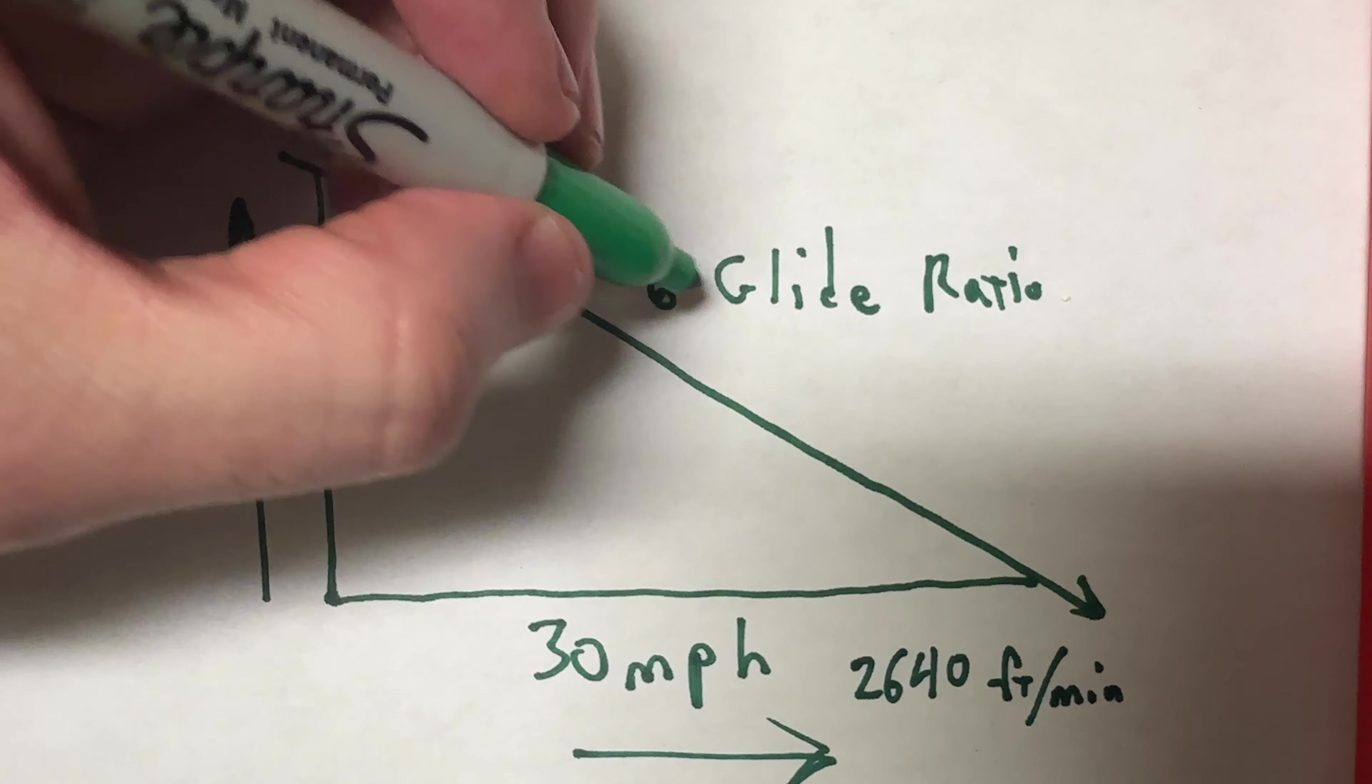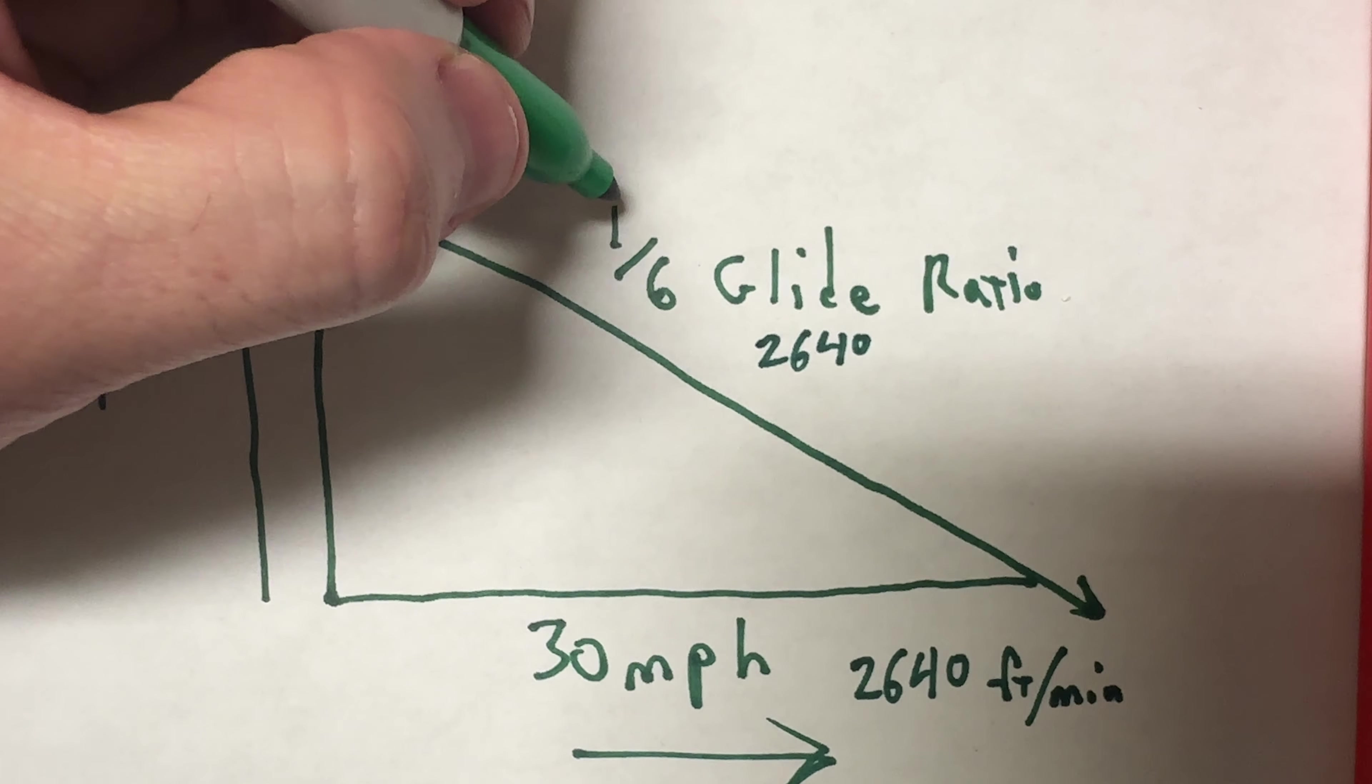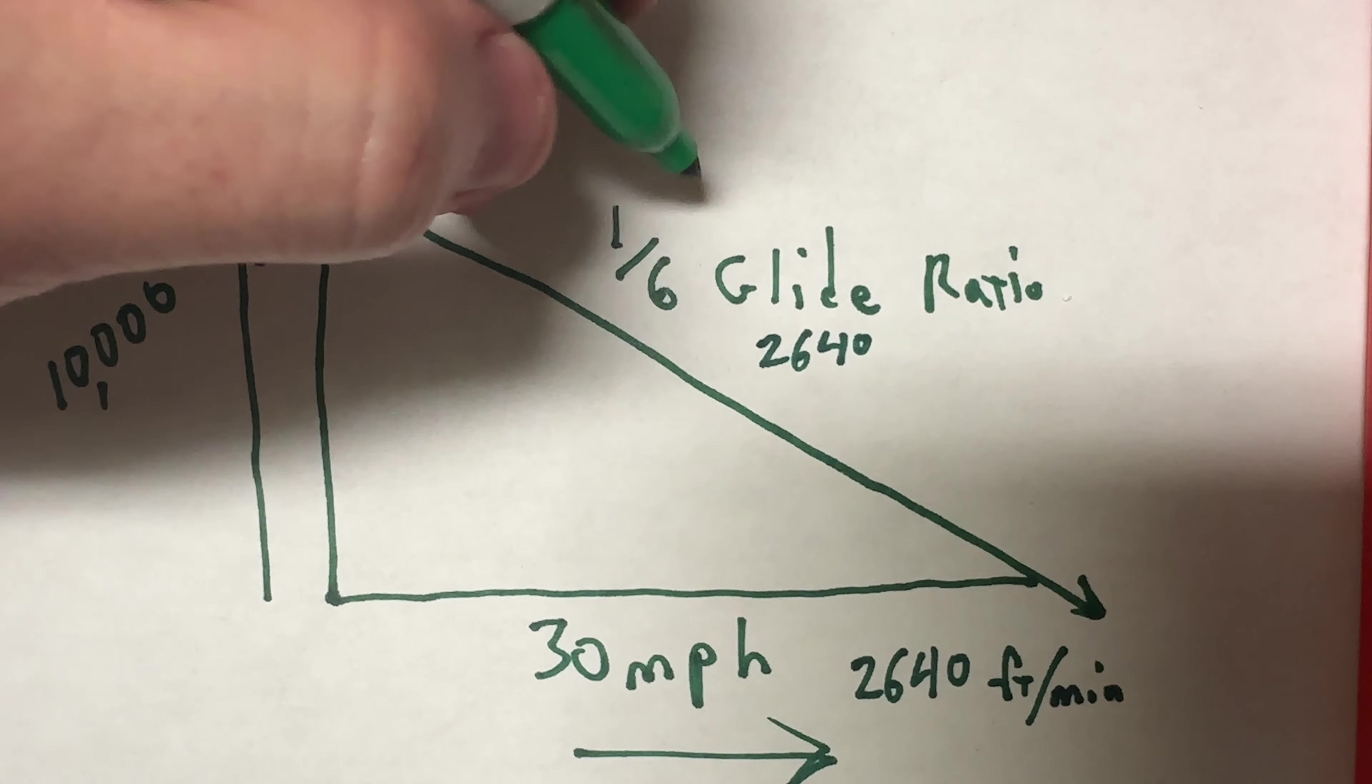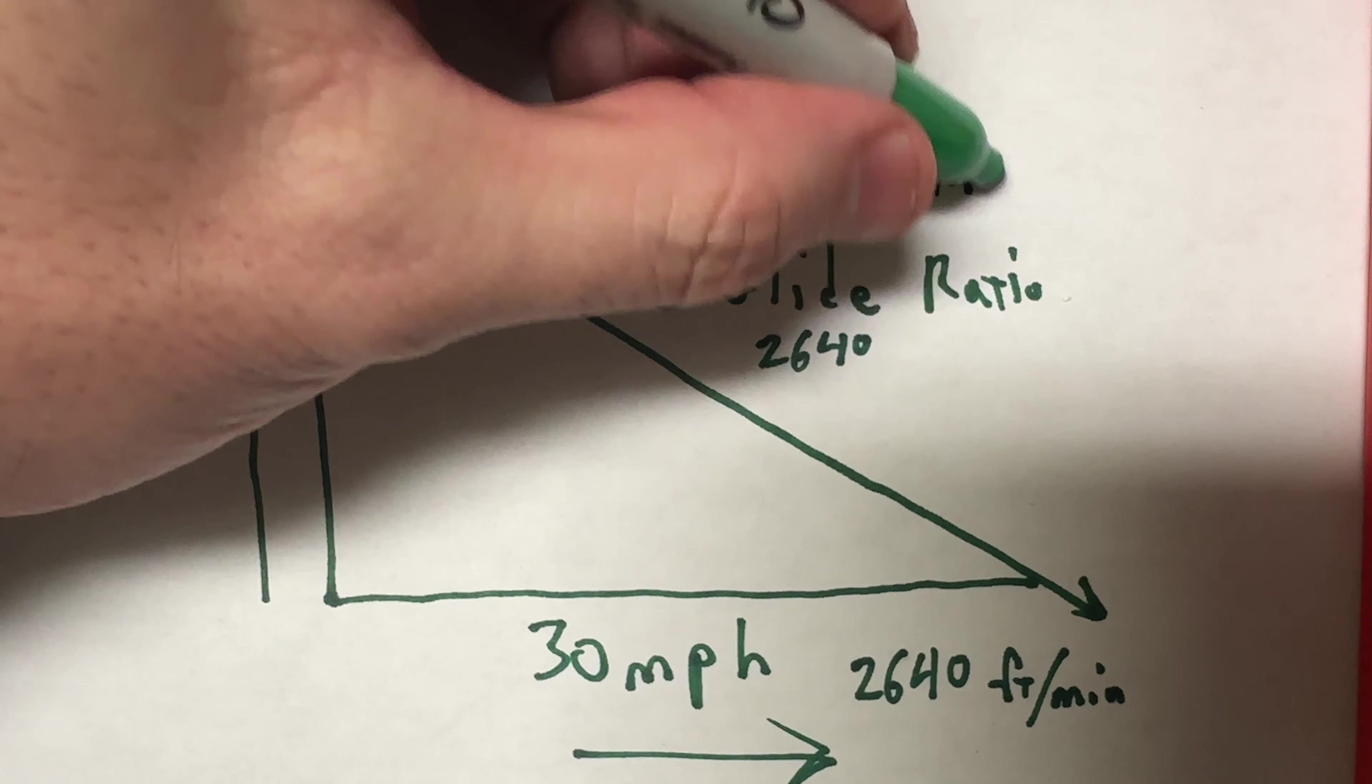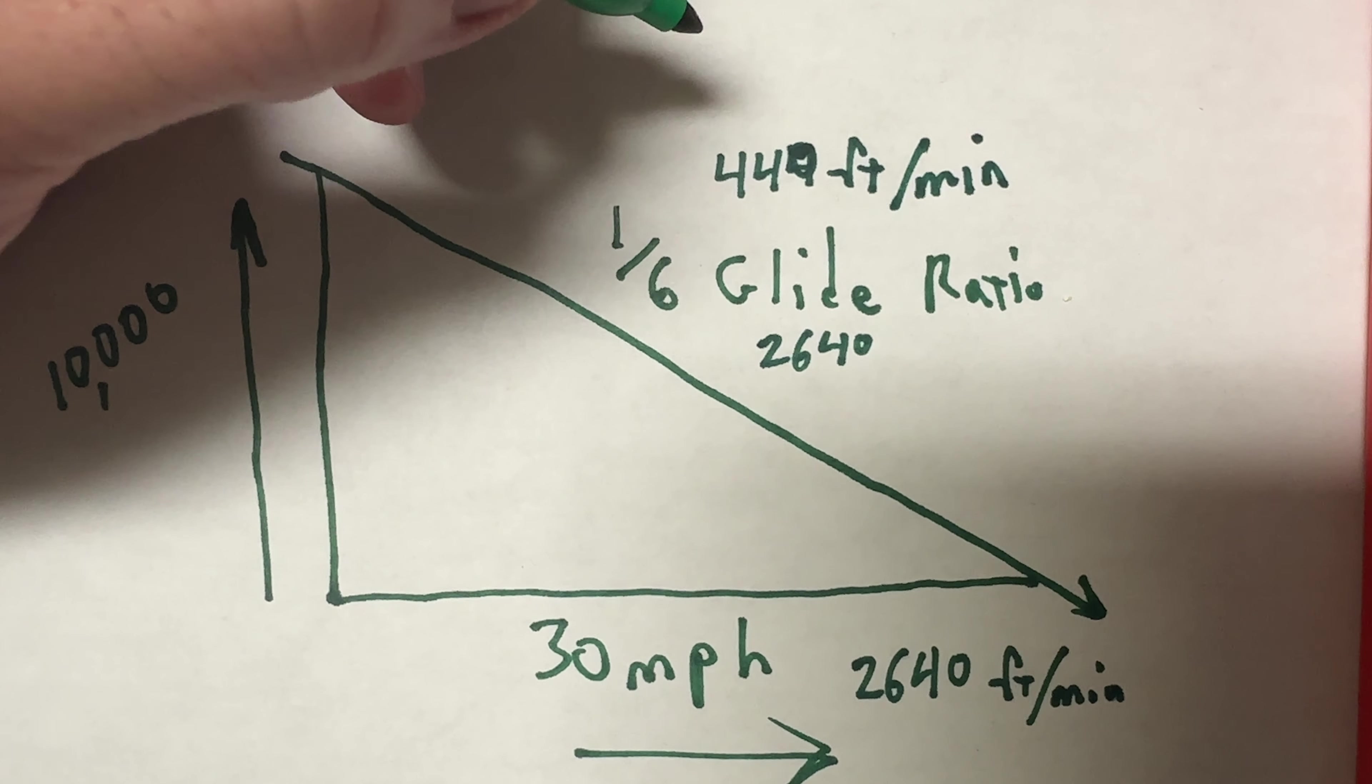So if I'm going 2640 feet per minute forward, and y'all tell me if my math is off, 2640. Now if I divide that by six, so if I'm going forward 2640 feet per minute, then I would be going down 440 feet per minute. So y'all tell me if I did that right.